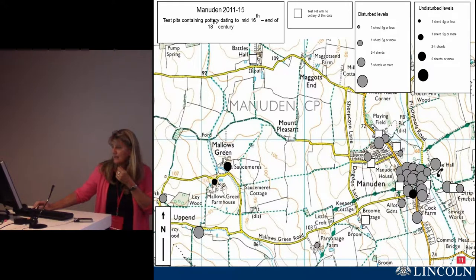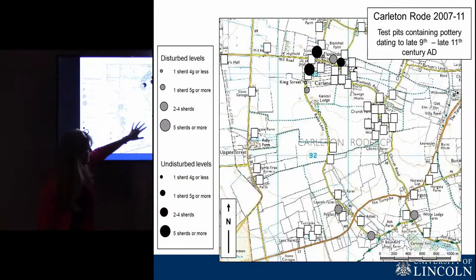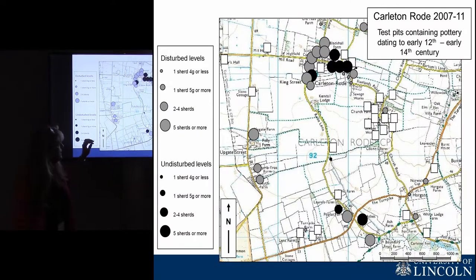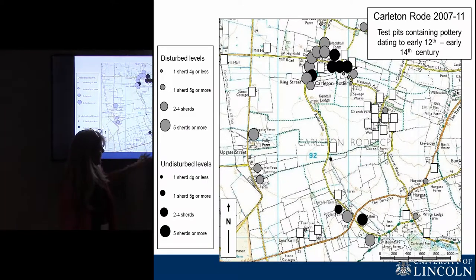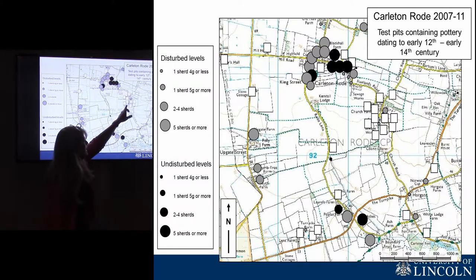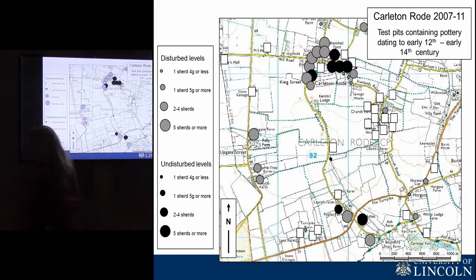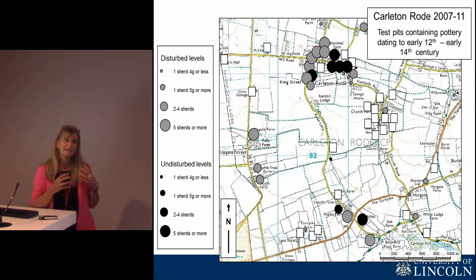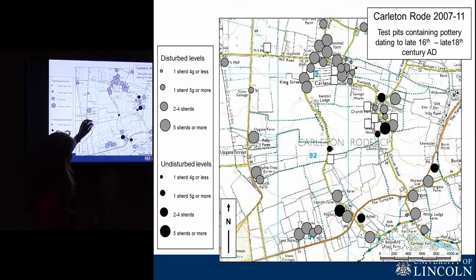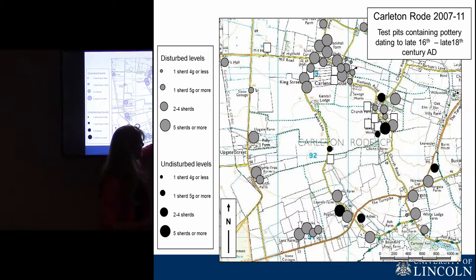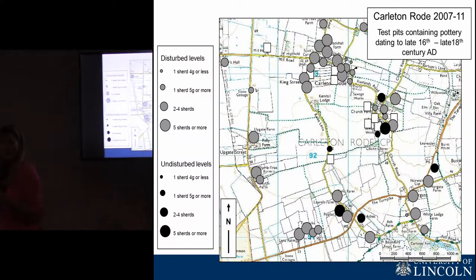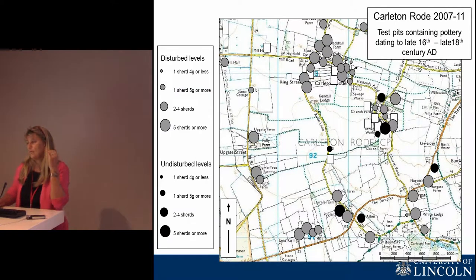At Carlton Road we have a dispersed settlement pattern in the high medieval period, before the Black Death, on the edge of a common, with isolated farms quite far apart from each other. Interestingly there is actually nothing around the church — the parish church is just underneath that area on the map. We see depopulation after the Black Death, and then very intensive use of the landscape in the 16th to 18th century, with nearly all sites producing large amounts of pottery. For the first time we actually have settlement around the church, which has been there since the 13th century but was isolated until this later period.